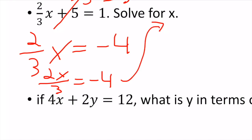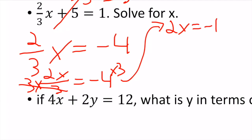There are two ways to do this — the long way and the quicker way. The long way: I have 2x on top, I want to get rid of the bottom first, so I multiply both sides by 3. Those cancel and I end up with 2x = -12.